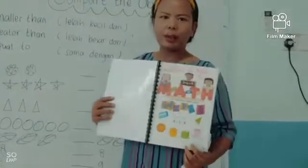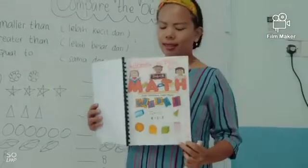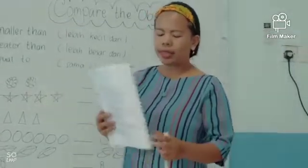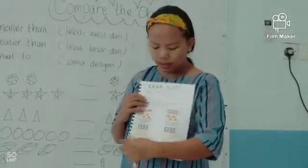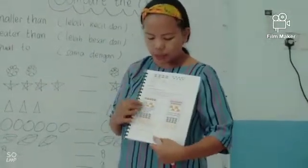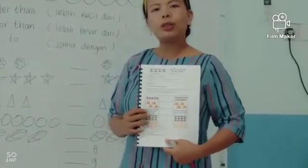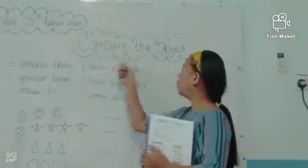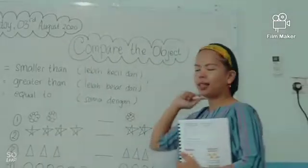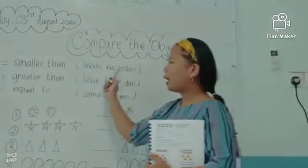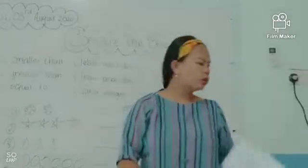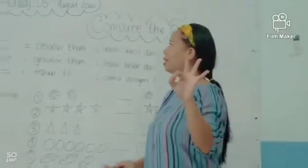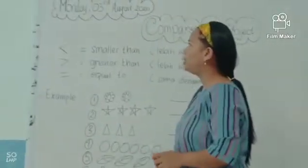You can open your book to page 7. This is the picture. We want to study now about how to compare objects. If you want to compare the object, there are three symbols that we must know.